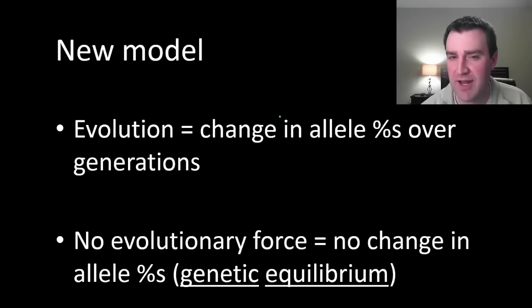We also have a concept for what happens if no evolution is occurring. If there is no evolutionary force changing the population, then the population's allele percentages will stay at wherever they are. We call that genetic equilibrium.